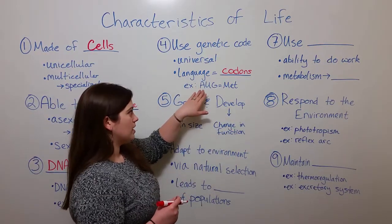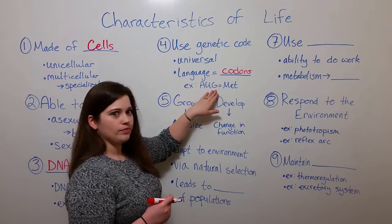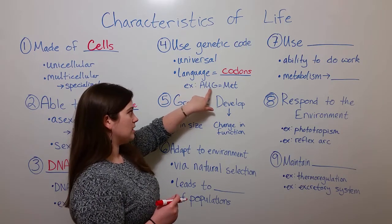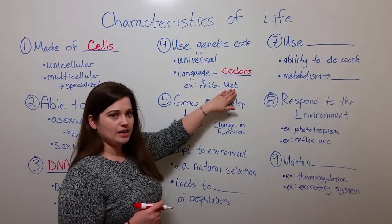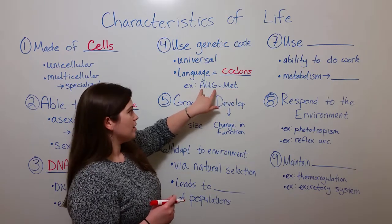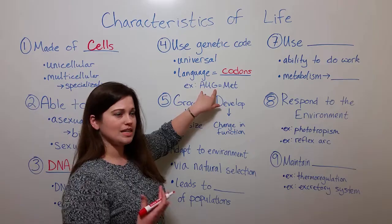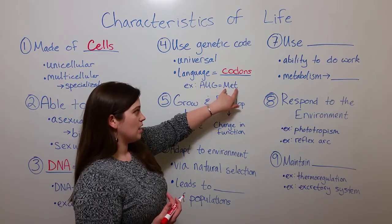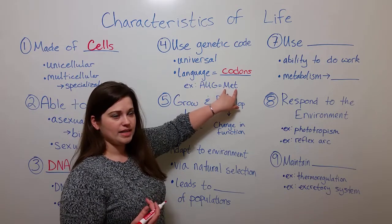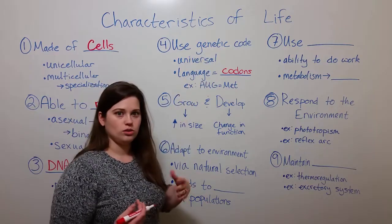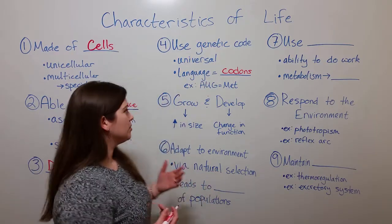For example, the codon AUG — adenine, uracil, guanine — always codes for methionine. So whenever there is this codon in RNA, the protein that is made incorporates a methionine in its place. This genetic code is used by all living organisms.